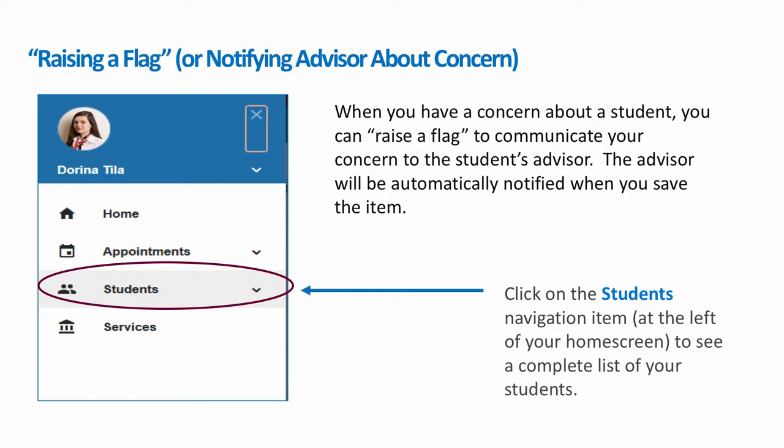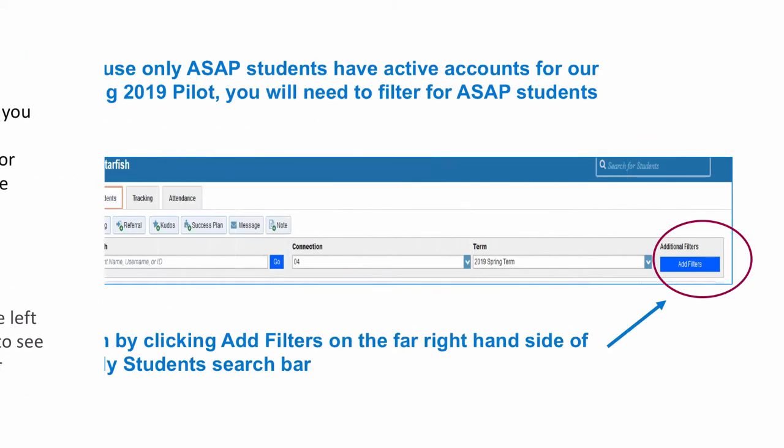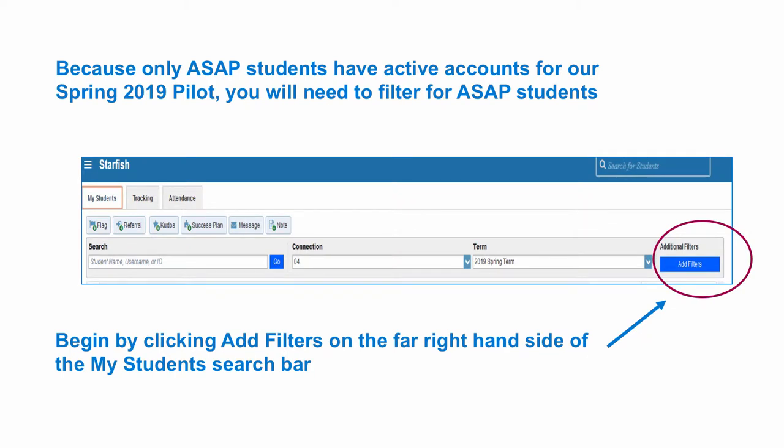To begin, click on the navigation item Students on the left on your home screen. You will see a list of your students. Because our pilot is for ASAP students only, you will need to filter your students since you will only be able to raise flags for ASAP students. To do this, click on Add Filters on the right-hand side of the My Students search bar.